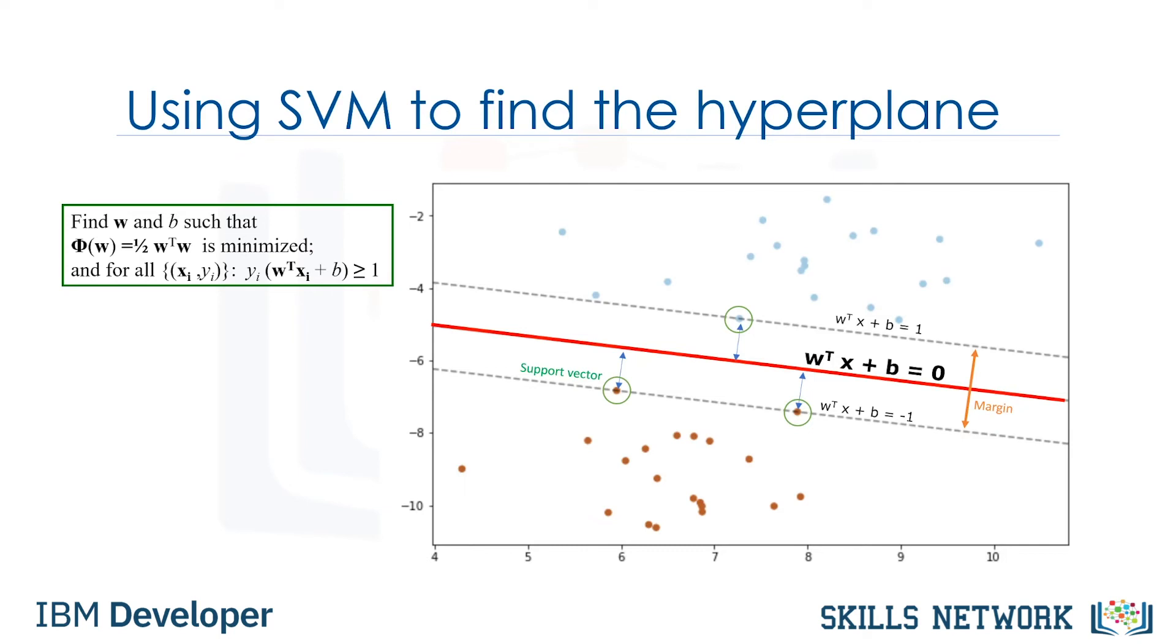So, finding the optimized hyperplane can be formalized using an equation which involves quite a bit more math, so I'm not going to go through it here in detail. That said, the hyperplane is learned from training data using an optimization procedure that maximizes the margin. And like many other problems, this optimization problem can also be solved by gradient descent, which is out of scope of this video. Therefore, the output of the algorithm is the values w and b for the line.